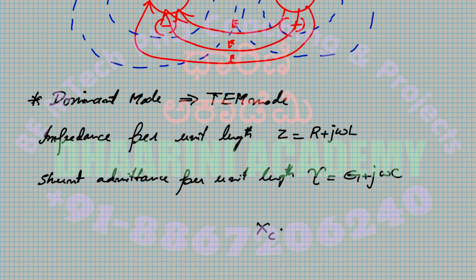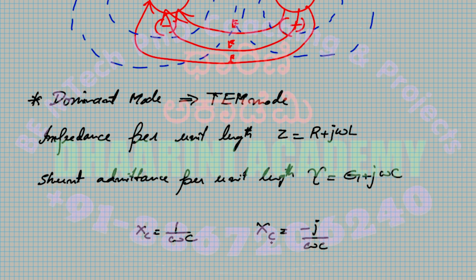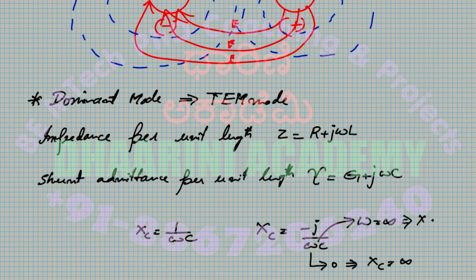The capacitive reactance Xc = 1/(ωC). When ω = 0, Xc becomes infinite — a DC signal cannot pass through a capacitor. When ω → ∞ (very high frequency), Xc becomes zero. So the capacitor passes pure AC signals but blocks DC signals.